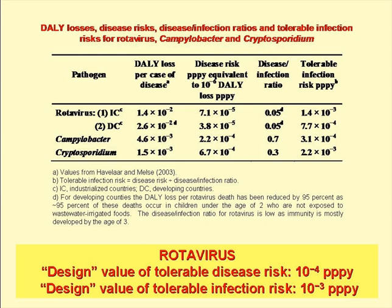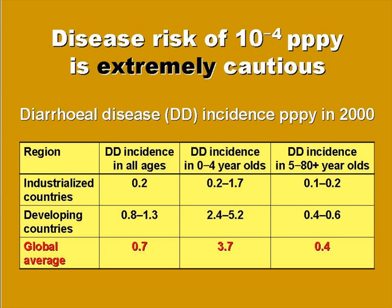These values tell us that a reasonable design risk for rotavirus disease is 10 to the minus 4 per person per year, and for rotavirus infection risk, 10 to the minus 3 per person per year. However, this design rotavirus disease risk of 10 to the minus 4 per person per year is extremely cautious, given the much higher actual incidence of diarrheal disease, which in the world as a whole is 0.4 per person per year for the over-fives — roughly 10 to the minus 1 — so our design risk is some three orders of magnitude lower than the actual incidence of diarrheal disease in the world today.